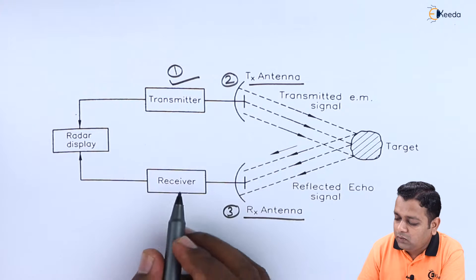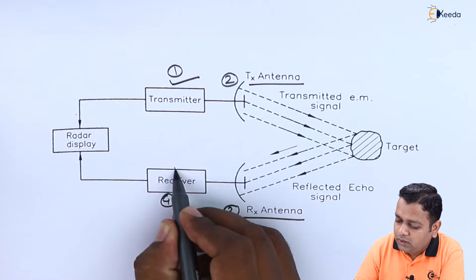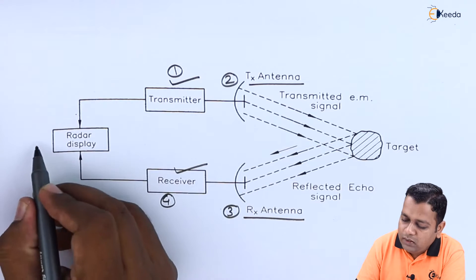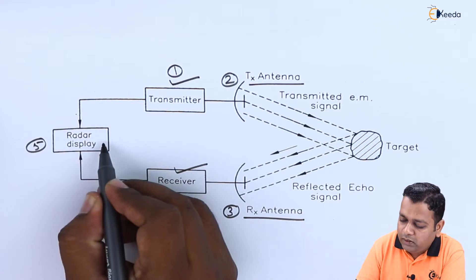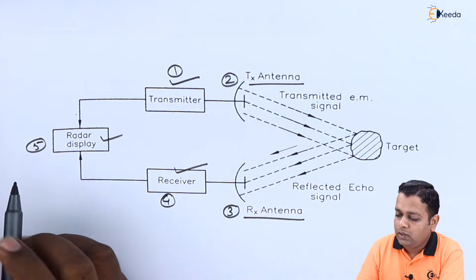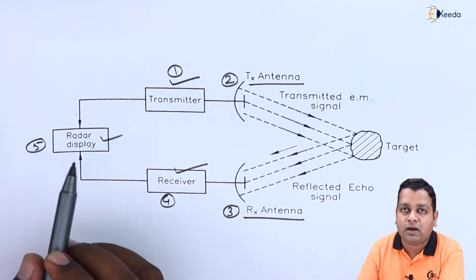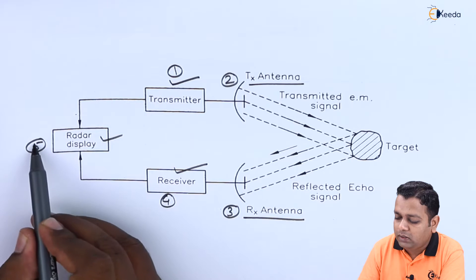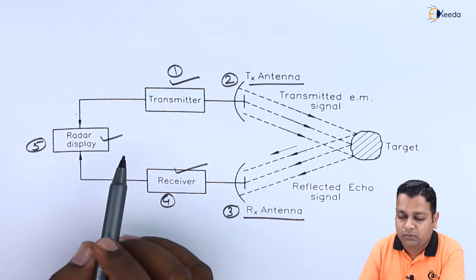The third important thing we take to be the receiving antenna. Next to that we have the fourth one to be the receiving section and the fifth block is the radar display.